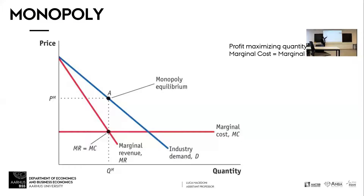For each additional unit of output, the marginal revenue is still larger than the marginal cost, so we still produce that because our revenues increase by more than our costs. We're going to keep doing that until the marginal revenue curve MR crosses the marginal cost curve MC. At that point, to produce an additional unit of output, the two things cancel each other. If you go to the right of that, your marginal costs are higher than marginal revenue, so you make a loss — so you don't do that.